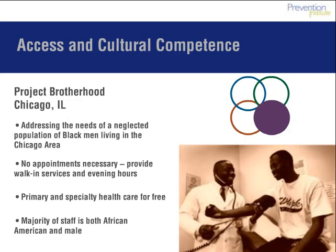An example from Chicago demonstrates how culturally appropriate care makes services more accessible and meets the health and safety needs of residents. Project Brotherhood in Chicago, Illinois was formed to address the physical and mental health needs of a neglected population of black men. The project addresses the financial, cultural, and social barriers to care. Staff see patients on a walk-in basis, services are provided for free, and most of the staff is African American and male. Staff also hold casual evening gatherings weekly, which provide informal support group discussions, fatherhood classes, counseling, and even haircuts by a barber to provide a more inviting environment. Project Brotherhood is looking beyond the traditional medical model, working to create a safe, male-friendly place where a wide range of health and social issues confronting black men can be addressed.